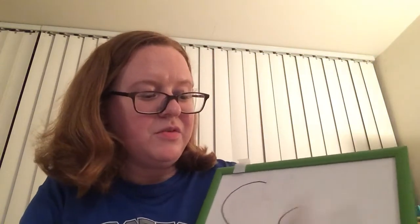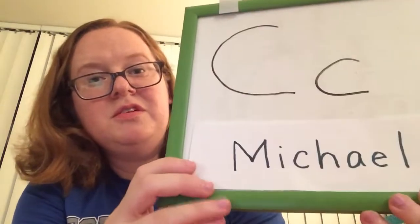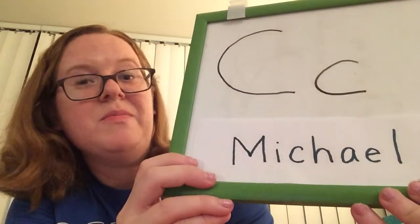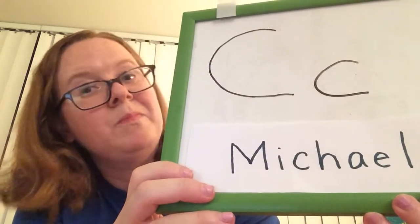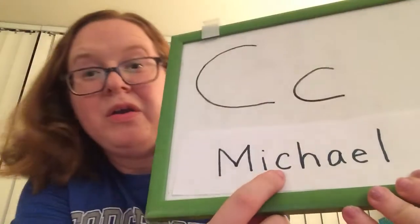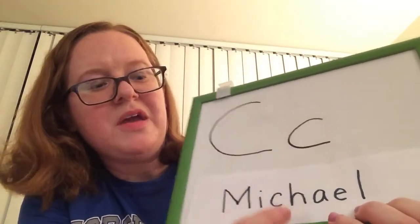And let's look for letter C in one more friend's name. This is Michael. He's a friend in the Rainbow Cats room. Can you find the C in his name? You found it. Look at that curve. Around and stop.